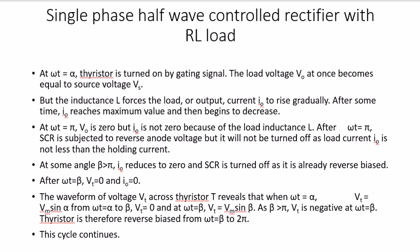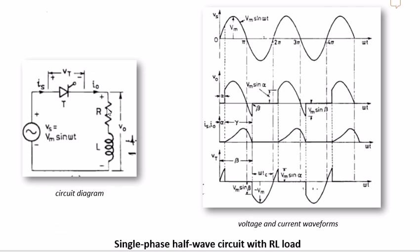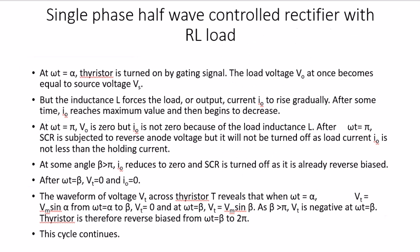R-L load means we are just adding an extra load — L is inductance — combined in series with R. In R-load we used only the resistor; in R-L load we are using an inductor combined in series with R. We are going to see what the R-L load does in this half wave control circuit. You can pause and go through the theory on screen.